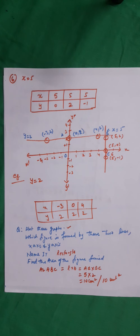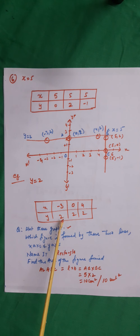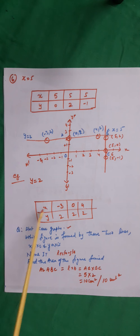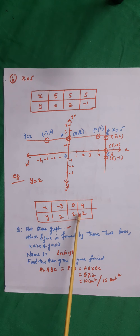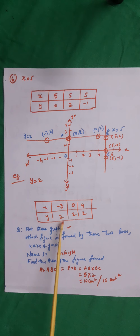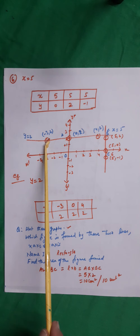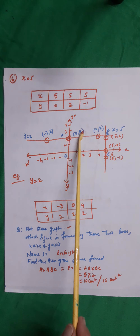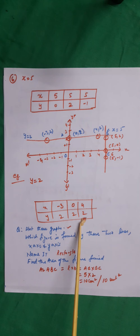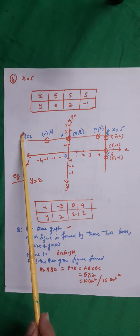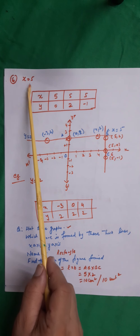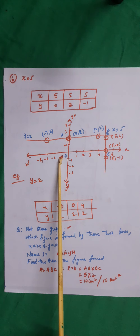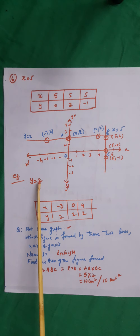Similarly, y equals 2 means the value of y is always fixed. Take y as 2, 2, 2 and x as minus 3, 0, and 4. Plot points (minus 3, 2), (0, 2), and (4, 2) and draw the line. So y equals 2 is a line parallel to the x-axis, and x equals 5 is a line parallel to the y-axis.